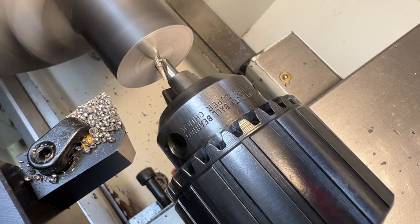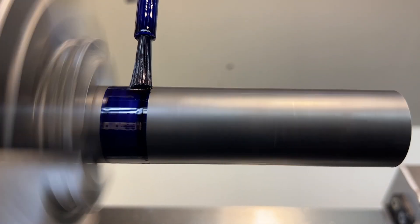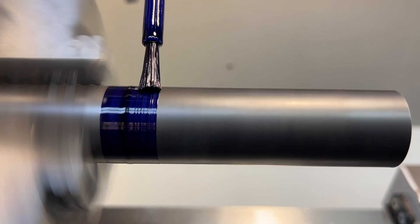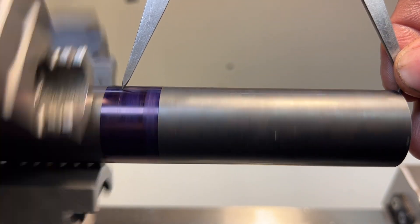Once that's done, we are just going to lay out our features using scribe lines. As you've seen, the drawing is a little bit rough and all of these features have wiggle room.